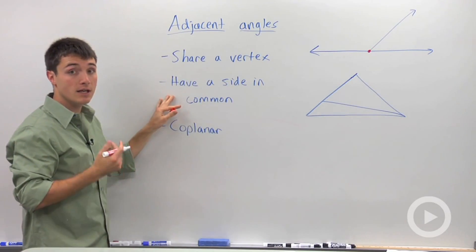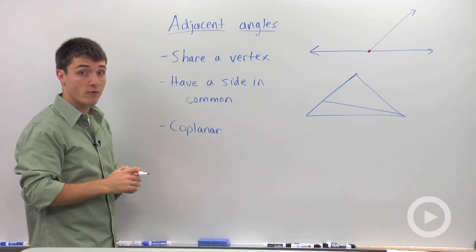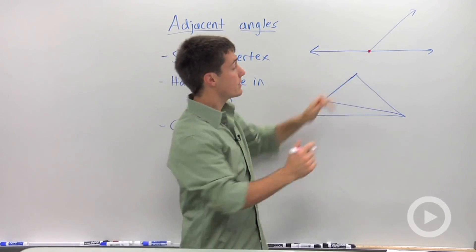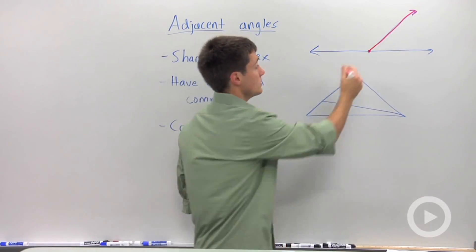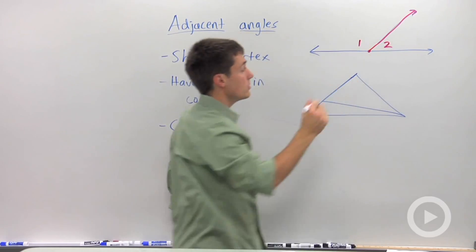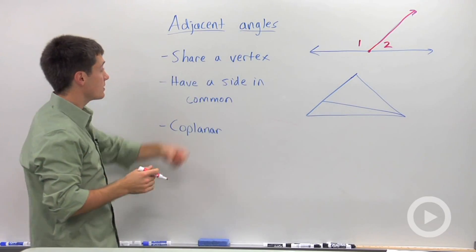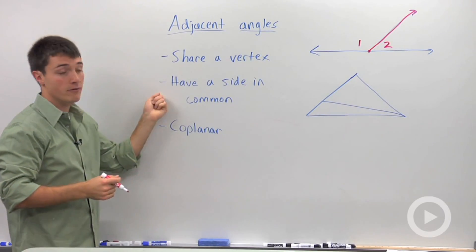They have a side in common, which sets them apart from vertical angles. So the side that these two angles share is that ray right there. So I could say that angle 1 and 2 are adjacent because they share a vertex and they have a side in common.